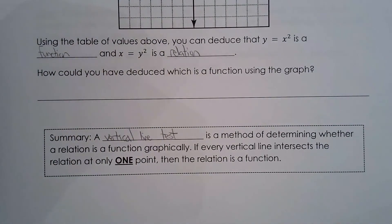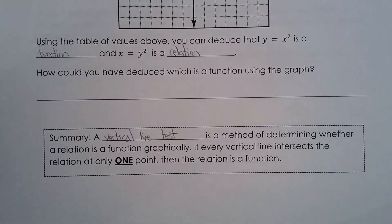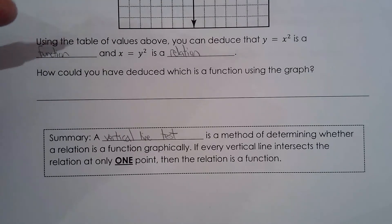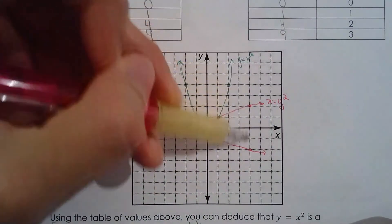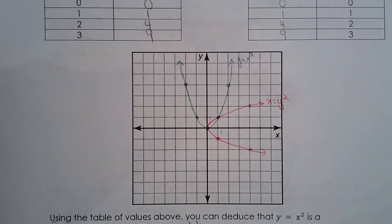The vertical line test is a method of determining whether a relation is a function when you're given the graph. You imagine drawing an infinite number of vertical lines and see if they only intersect the graph at one point. If a vertical line always intersects at one point, the relation is a function. If it crosses through two points, it fails. You only need to fail once to not be a function.